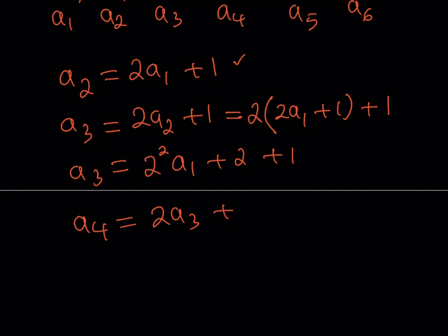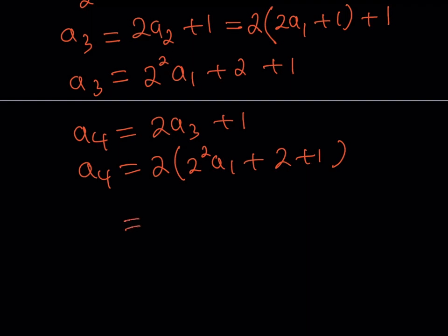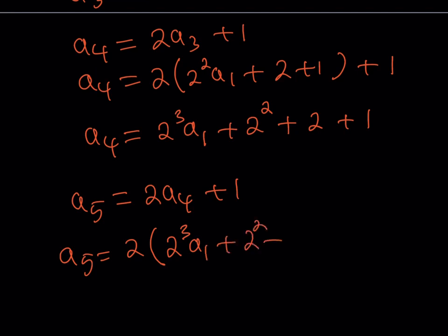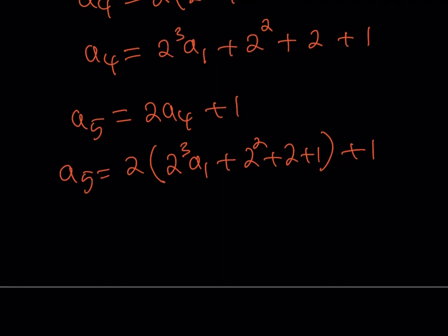a_4 equals 2 times a_3 plus 1. Replacing a_3 with 2 squared a_1 plus 2 plus 1 and distributing: 2 times 2 squared gives 2 to the third times a_1, then 2 times 2 written as 2 squared, then 2 times 1 is 2, plus 1. And a_5 equals 2 times a_4 plus 1. Distributing that giant expression gives us 2 to the 4th times a_1 plus 2 to the 3rd plus 2 to the 2nd plus 2 plus 1.